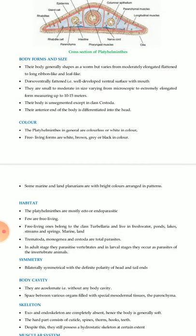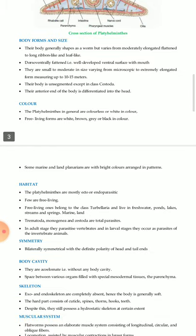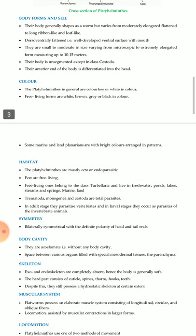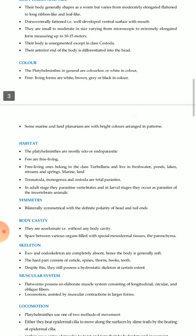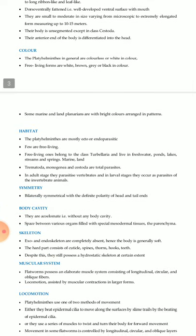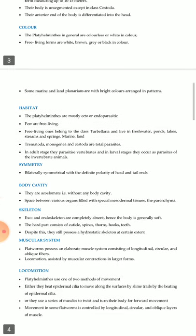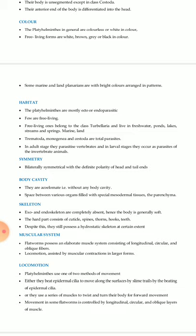Body forms and size: their body is generally worm-shaped but varies from moderately elongated and flattened to long ribbon-like and leaf-like; dorso-ventrally flattened with a well-developed ventral surface with mouth. They range from microscopic to extremely elongated, up to 10 to 15 meters. The body is unsegmented except in class Cestoda. The anterior end is differentiated into a head. Platyhelminthes are generally colorless or white; free-living forms are white, brown, gray, or black.